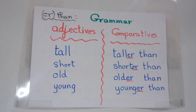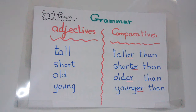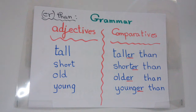These are adjectives — صفات للإنسان: طويل، قصير، كبير السن، صغير السن. Now let's look at the second column, which is called comparatives — يعني الصفات المقارنة.